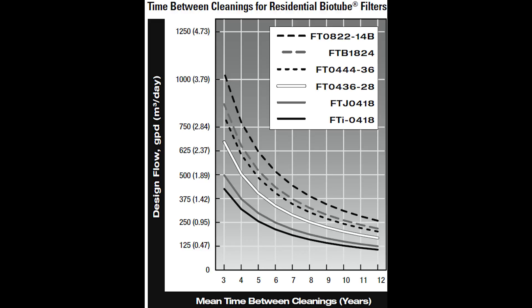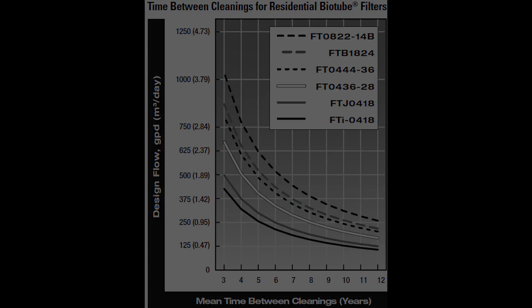Looking at the mean time between cleanings, the 4-4-4-36 is the most common one — that's the dashed line. That particular one, if you're in an average size home around 250 gallons per day, you don't have to clean it but once every 10 years. We recommend once every four years.